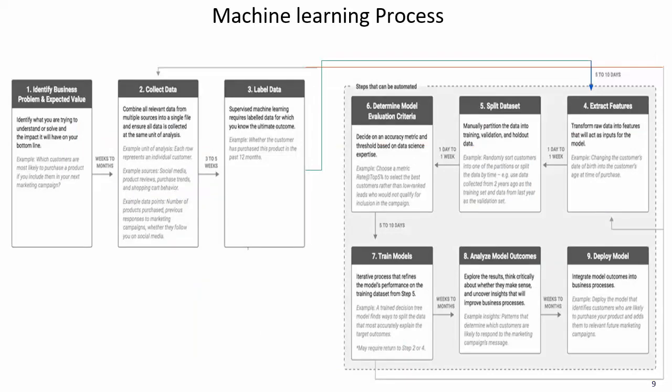To summarize the steps: collect data, label data, extract features, split the dataset into training and test sets, determine the model type — classification, regression, or clustering — train the models, analyze the model based on test data, and deploy the model in a real-time environment. In the next session, we will discuss how machine learning algorithms are implemented for real-time applications using tools, and we will also discuss reinforcement learning.